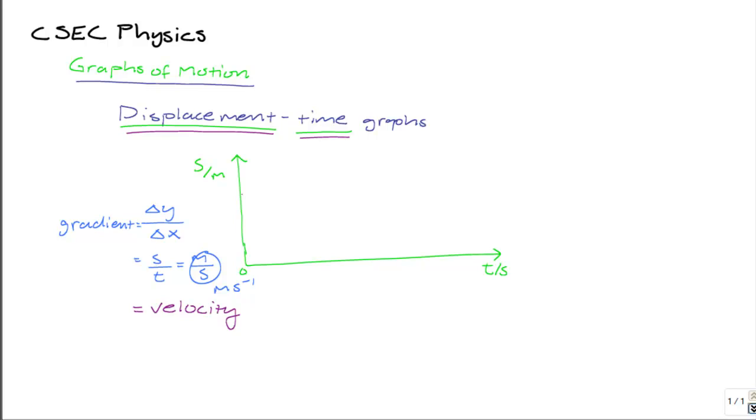The first thing we do is use the information that we're given to draw our graph. The object's displacement is 0 meters at 0 seconds. After 5 seconds, the object's displacement has increased to 10 meters. It has moved to 10 meters in 5 seconds. This is the displacement time graph for the information that we're given. Now using this information, we can calculate the gradient of our graph, which will be equal to the velocity.